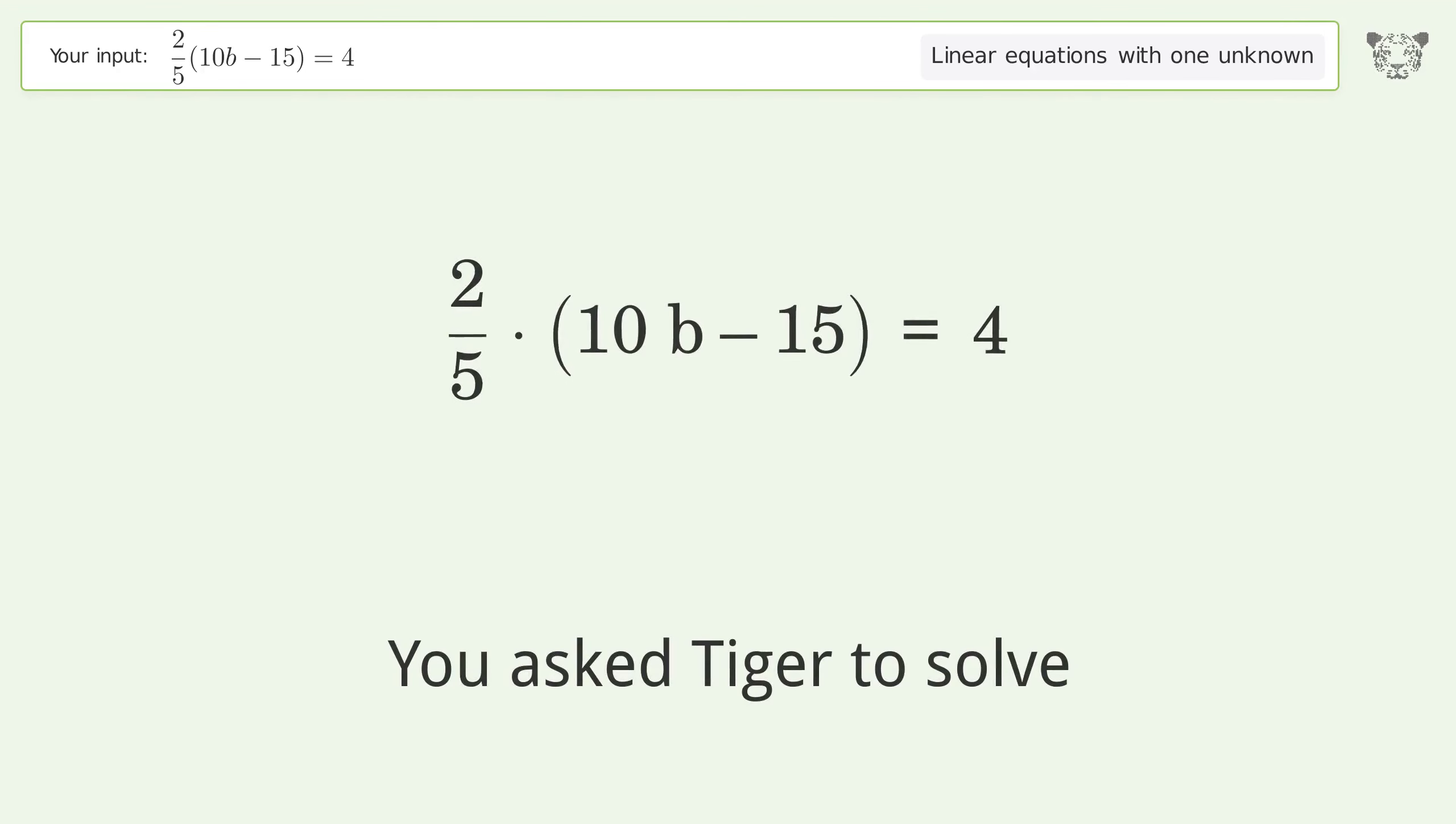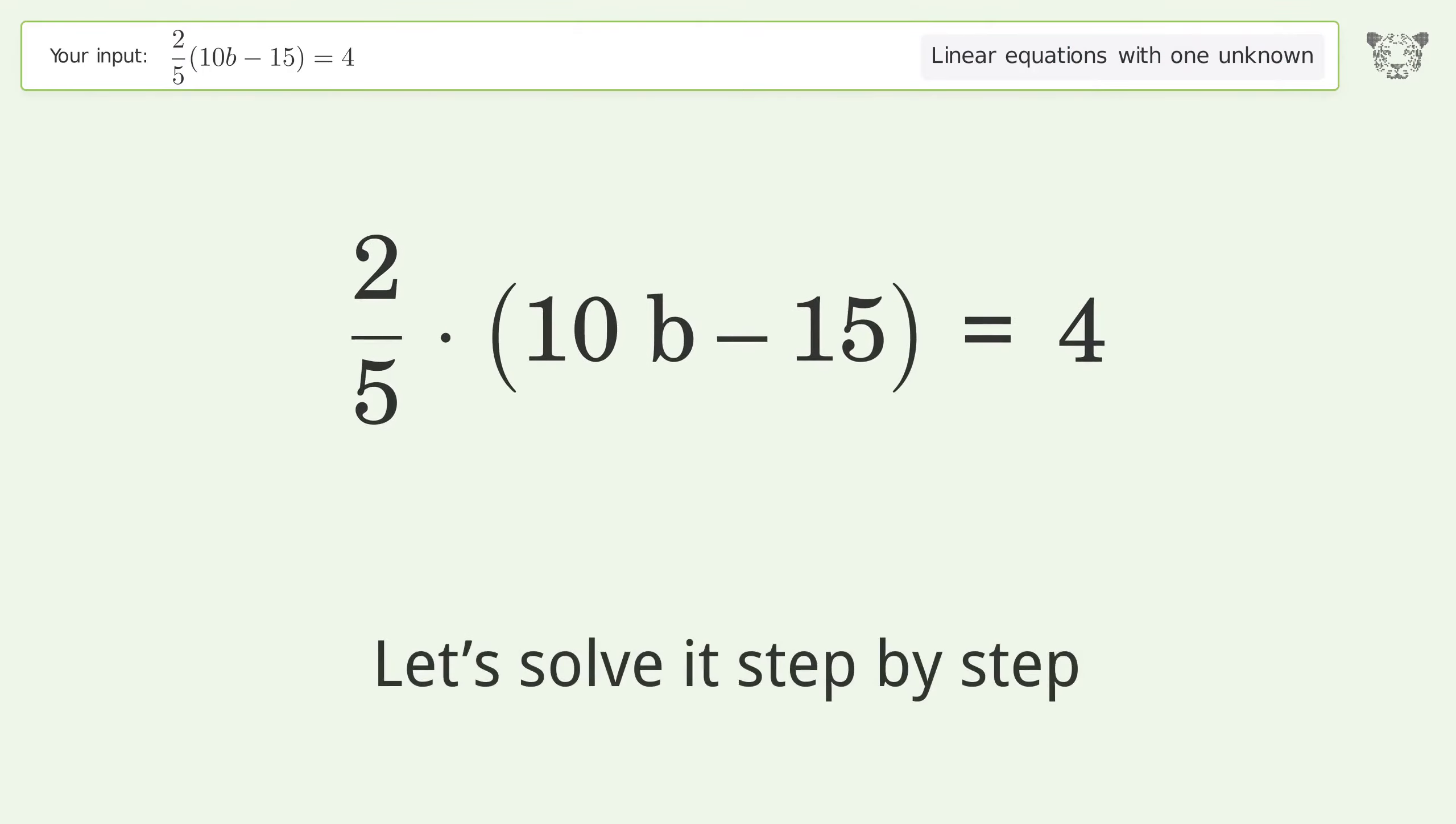You asked tiger to solve this. This deals with linear equations with one unknown. The final result is b equals 5 over 2. Let's solve it step by step. Simplify the expression.